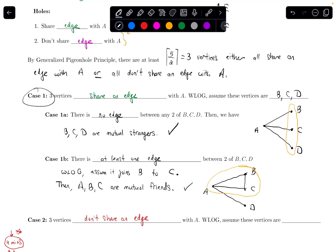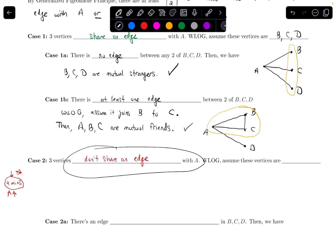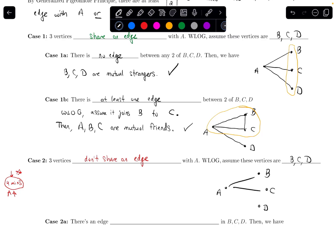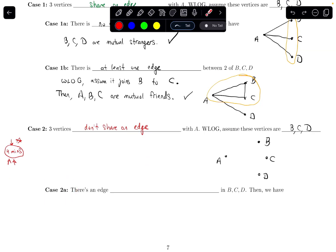So we are done with case one. In either subcase, we get three mutual strangers or three mutual friends. Case two is: what if three vertices don't share an edge with A? It doesn't matter which three, so WLOG let's assume those are B, C, and D. So there's no edge from A to B, A to C, or A to D. Pause the video for four minutes and see if you can finish from here — we'll need two subcases.